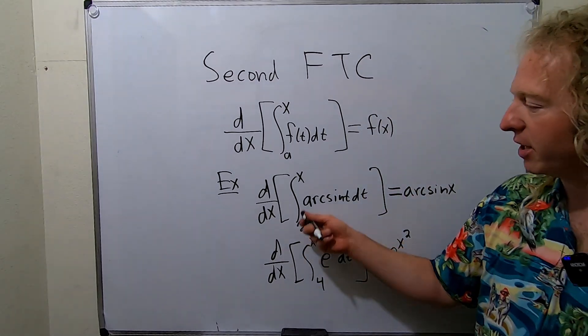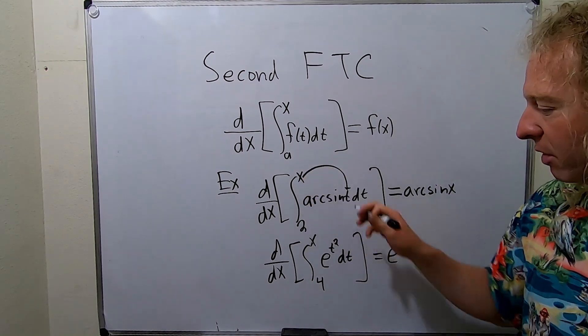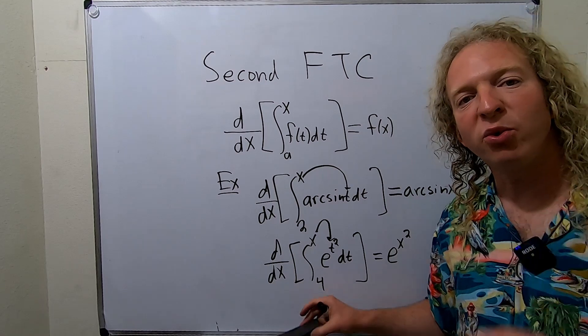So whenever you have a number here and an x and you take the derivative and it's set up just like this, you just take the x, put it where the t is. Take the x, put it where the t is.